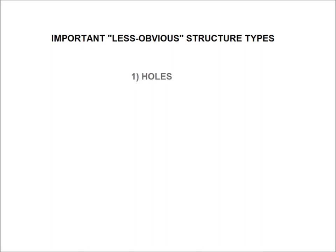So what are these less obvious structures, you ask? The big four in my book are holes, submerged points, lips, and rips, and their various combinations. So let's take a look at how these structures reveal themselves.